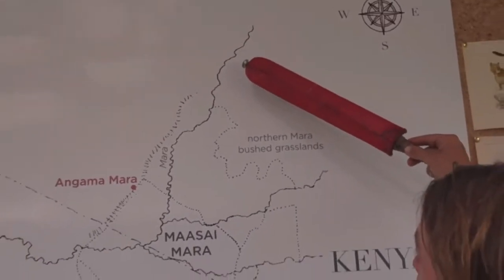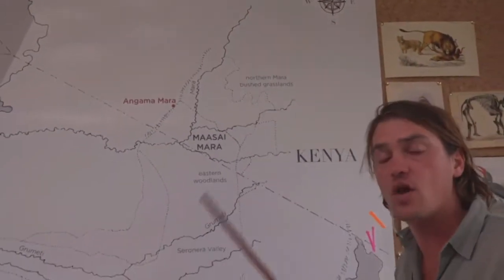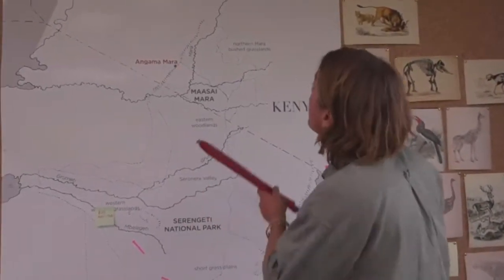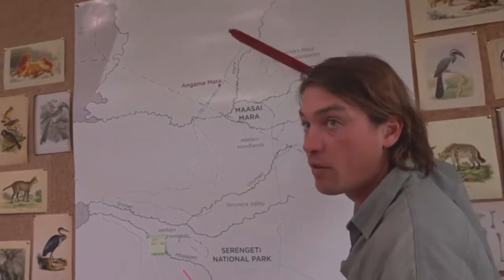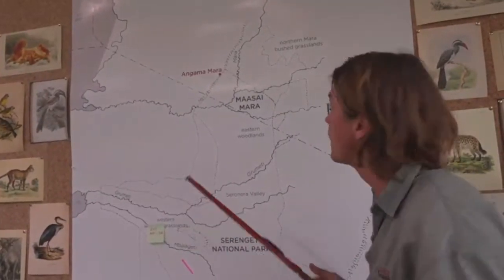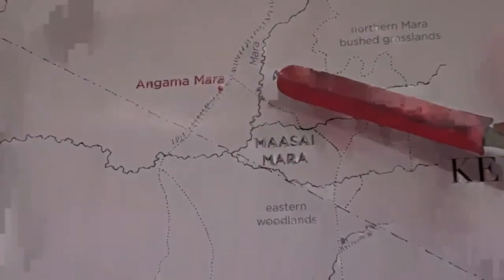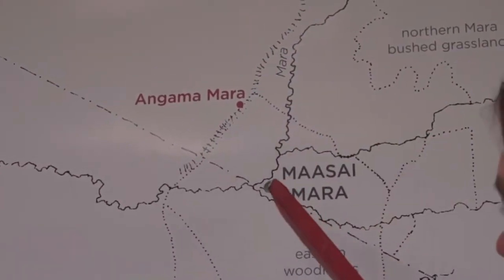It then gets into the associated Maasai ranches, which is large and small-scale cattle farming, before it enters the northern conservancies — the northern Mara bushlands — where it is cattle and tourism. It then enters into the Maasai Mara National Reserve and flows out into Tanzania.